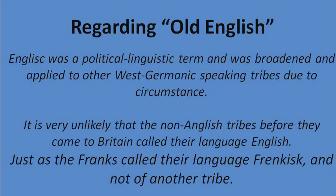Within the context of the time period, "English" was a political-linguistic term that was brought in and applied to other West Germanic-speaking tribes due to circumstance. King Alfred, due to circumstance — he was fighting Vikings — thought, "we're all English here." And due to demographics, there were a lot of Angles and not many Saxons, plus he had a lot of Anglian helpers from Mercia to help him write down and translate wisdom texts.